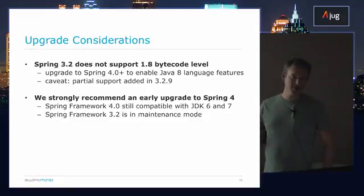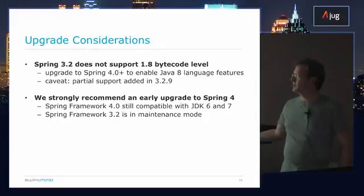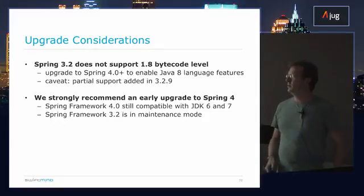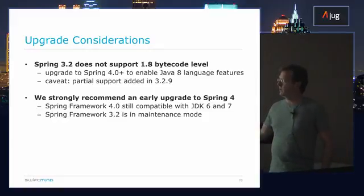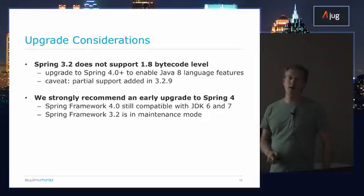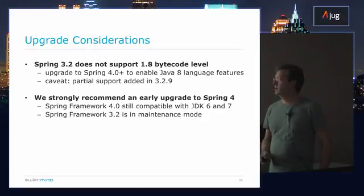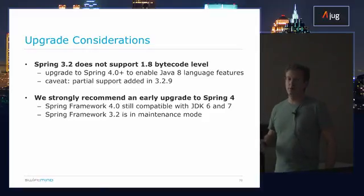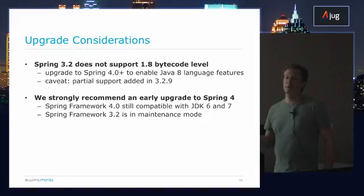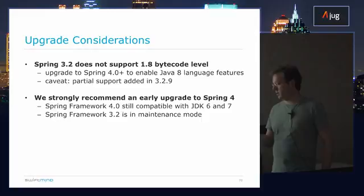With that in mind, we strongly recommend you upgrade as early as possible to 4.0. But keep in mind, even if you do upgrade to 4.0, you can still run and compile against Java 6 and Java 7 — so that's not a problem at all. Just don't use any of the Java 8 features, like repeatable annotations, named parameters, or lambdas, for example.